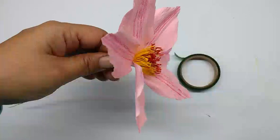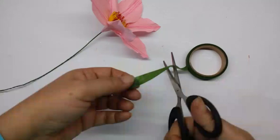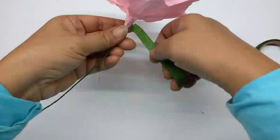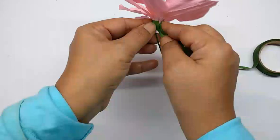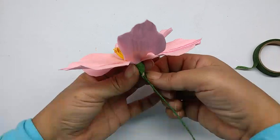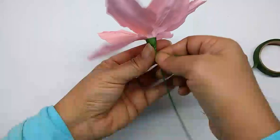So this is how the flower would look. Now cut a bit of green floral tape, stretch it and wind this on the base of the flower. This flower does not have any sepals, so just cover the base that we made.